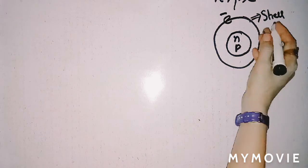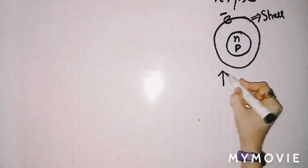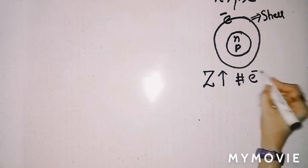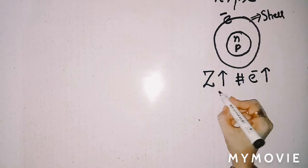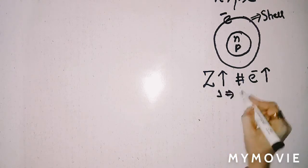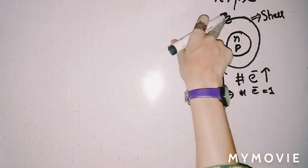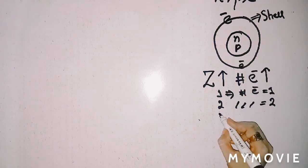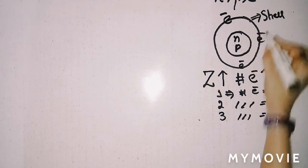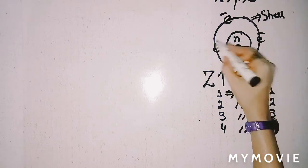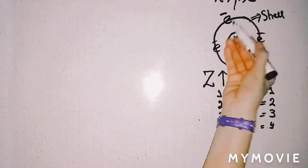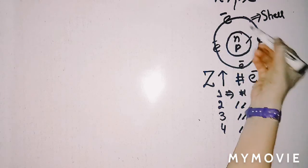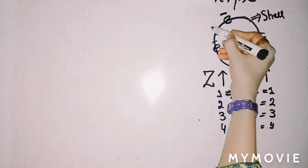This is the structure of an atom. As the atomic number of an element increases, the number of protons (represented by Z) increases, and the number of electrons also increases. If you have atomic number 1, the number of electrons is 1. If atomic number is 2, electrons are 2, and so on. Electrons will be distributed in the given shell.